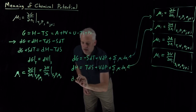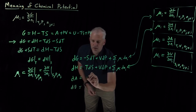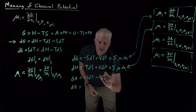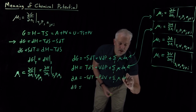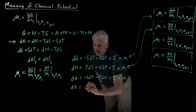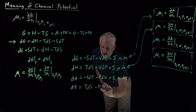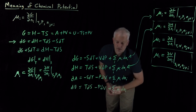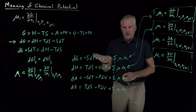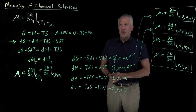For the Helmholtz free energy and the internal energy, we have: the Helmholtz free energy is minus SdT minus PdV plus the sum of the chemical potentials times the change in number of moles. The internal energy is TdS minus PdV plus the chemical potential times the change in number of moles. Those are our new versions of the fundamental equations for a multi-component system where we have more than one type of molecule.